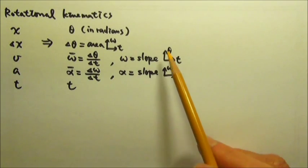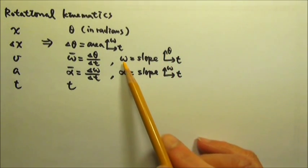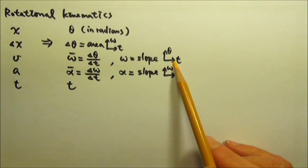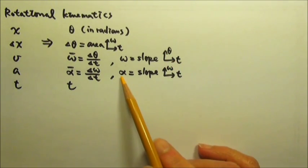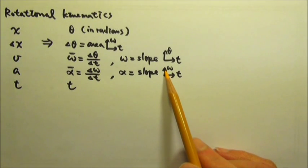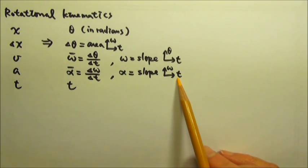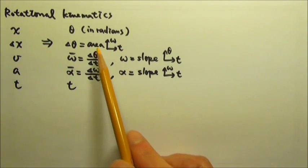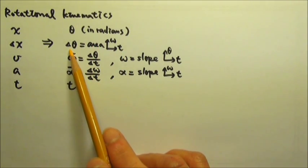If we have a graph problem, the angular velocity is the slope of the angular position versus time graph. The angular acceleration is the slope of the angular velocity versus time graph. And the area under an angular velocity versus time graph gives us the angular displacement.